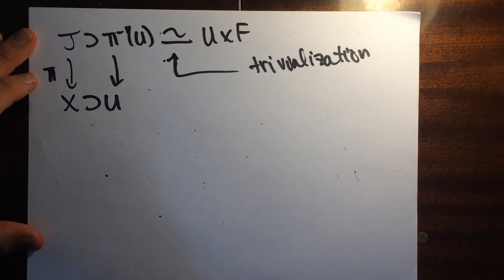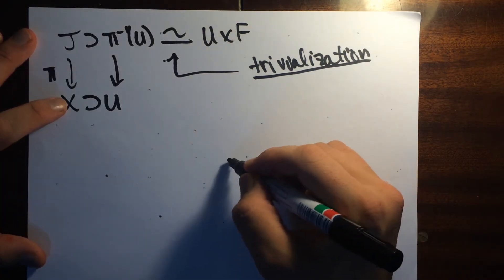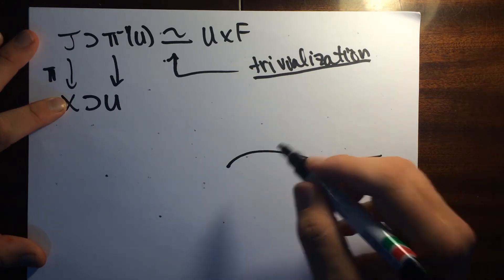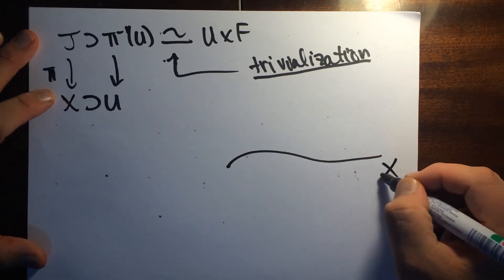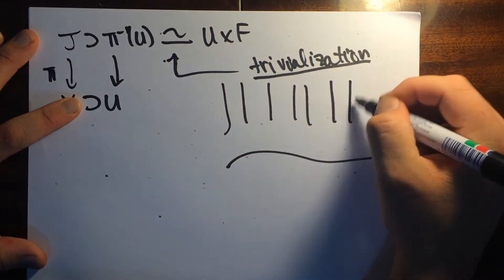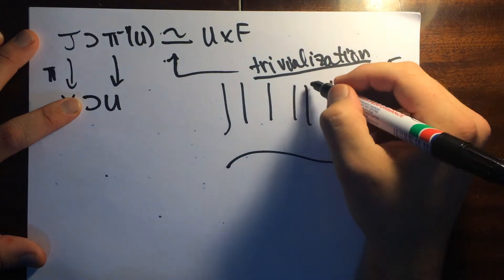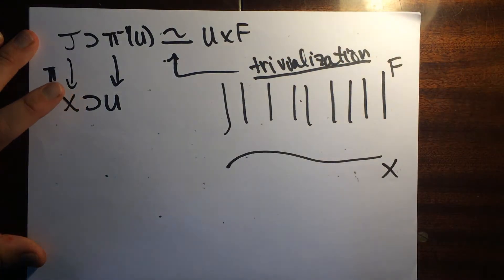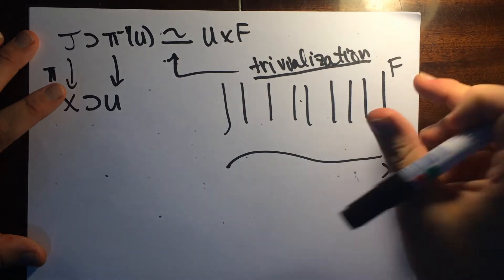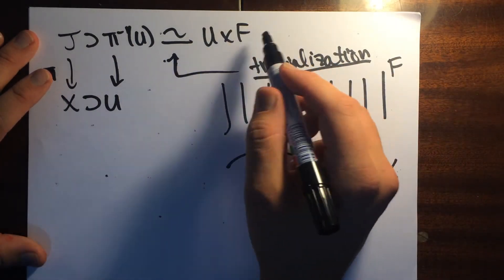That's what a trivialization is. I draw this picture a lot but it applies to many things. You're just going to have a bunch of fibers here. These are all copies of F and they're maybe twisted. They can be varying in a non-trivial way so that it's not globally like the trivial fiber product.